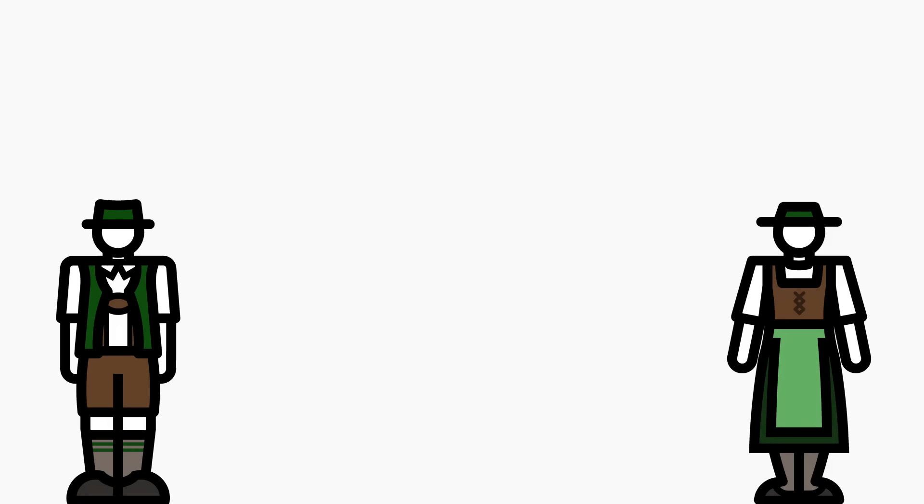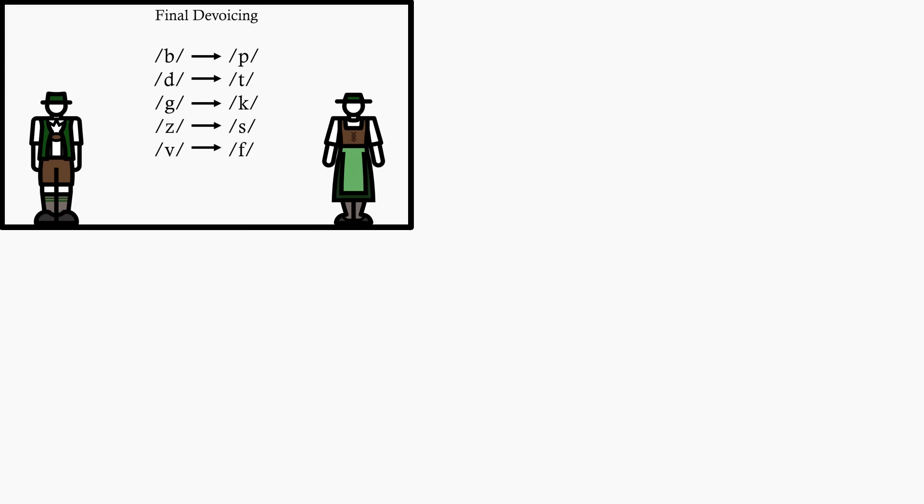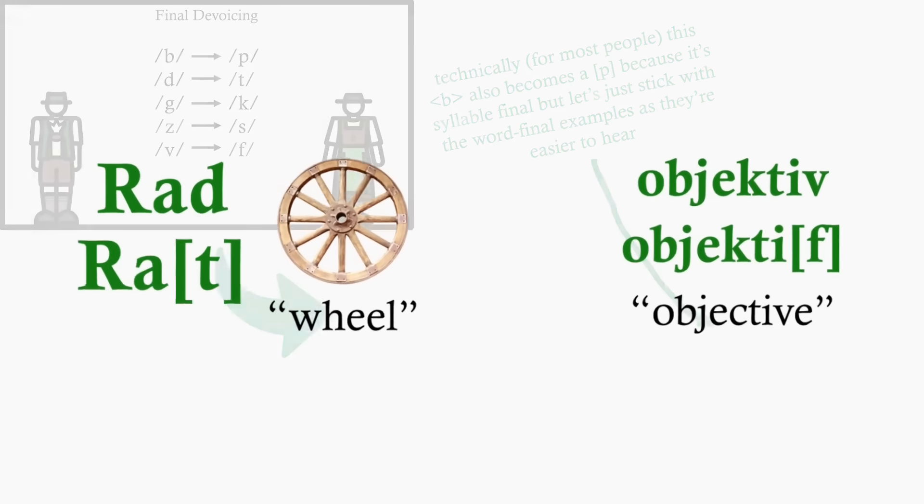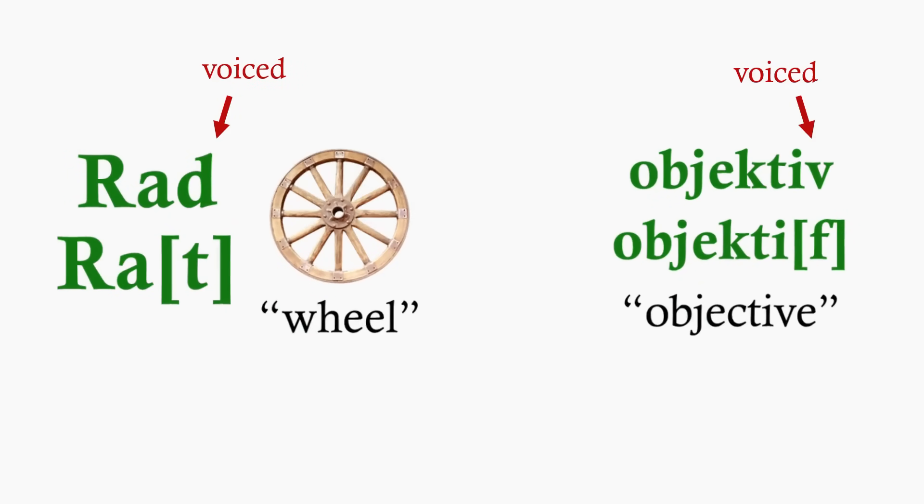In German, there's a phonological rule called final devoicing. When a syllable ends in a voiced obstruent, it is replaced by a voiceless one. Hence, this is pronounced Rath, and this is pronounced Objektiv. As you see, the D and V, which are voiced, are replaced by their voiceless counterparts T and F.